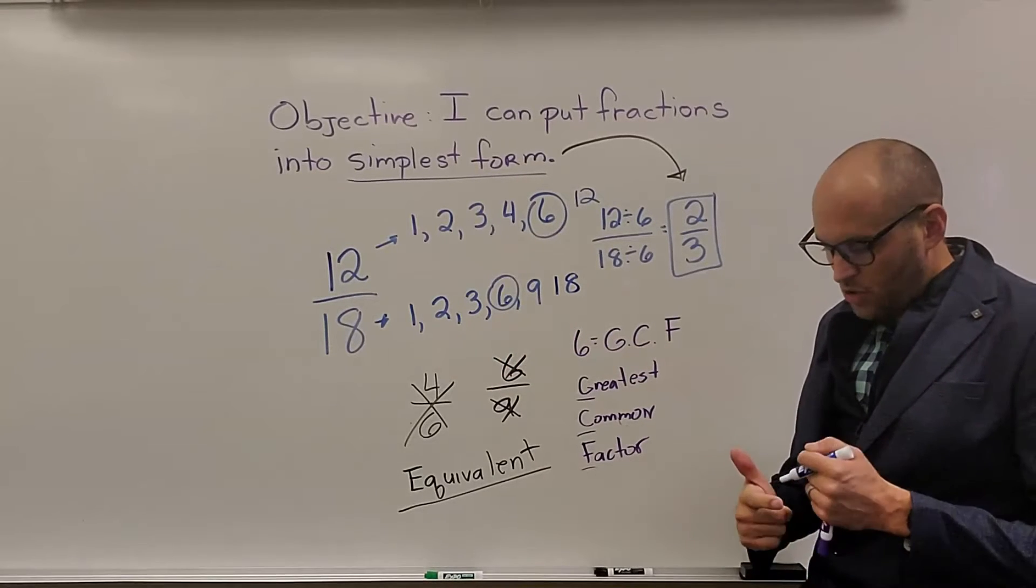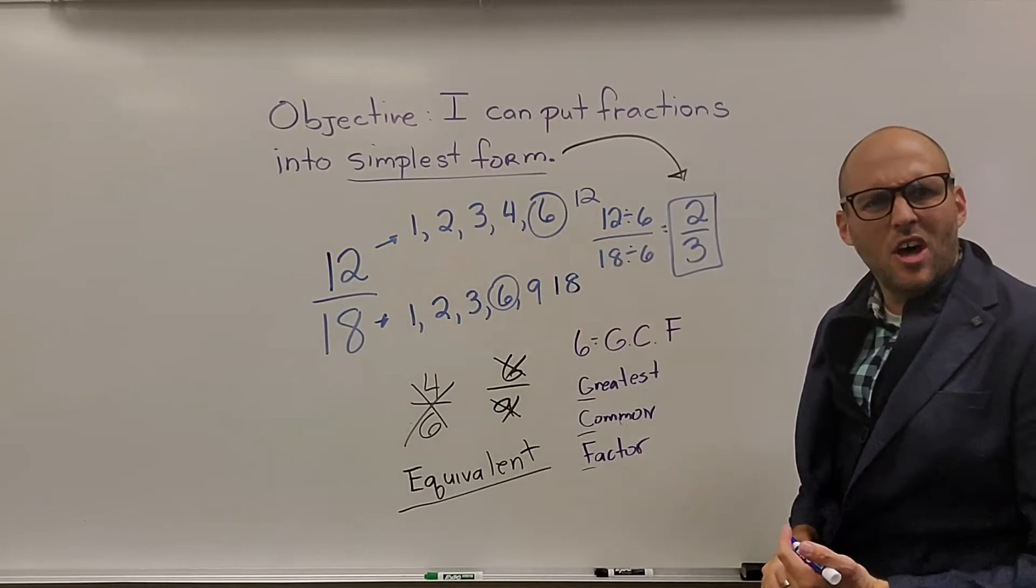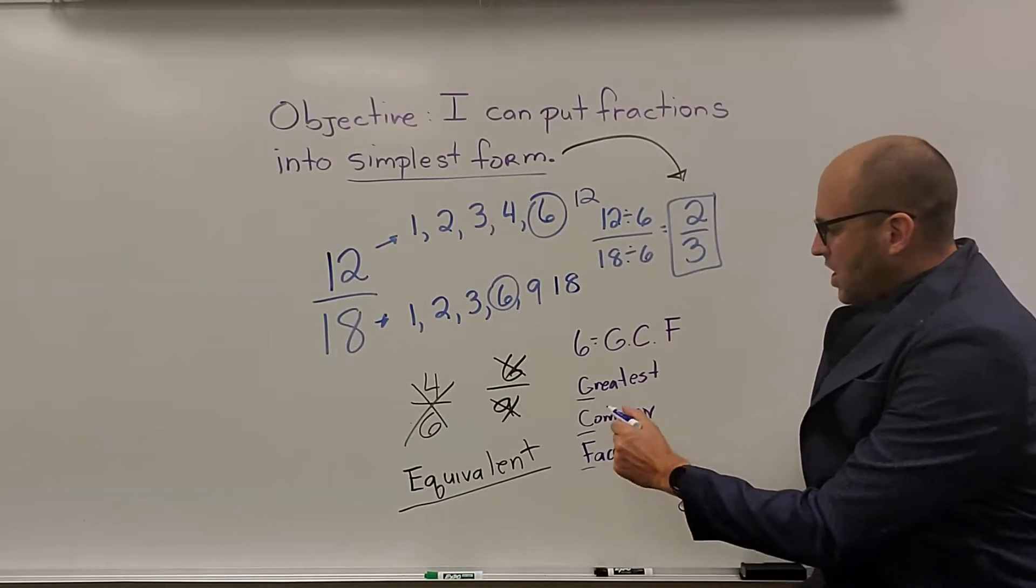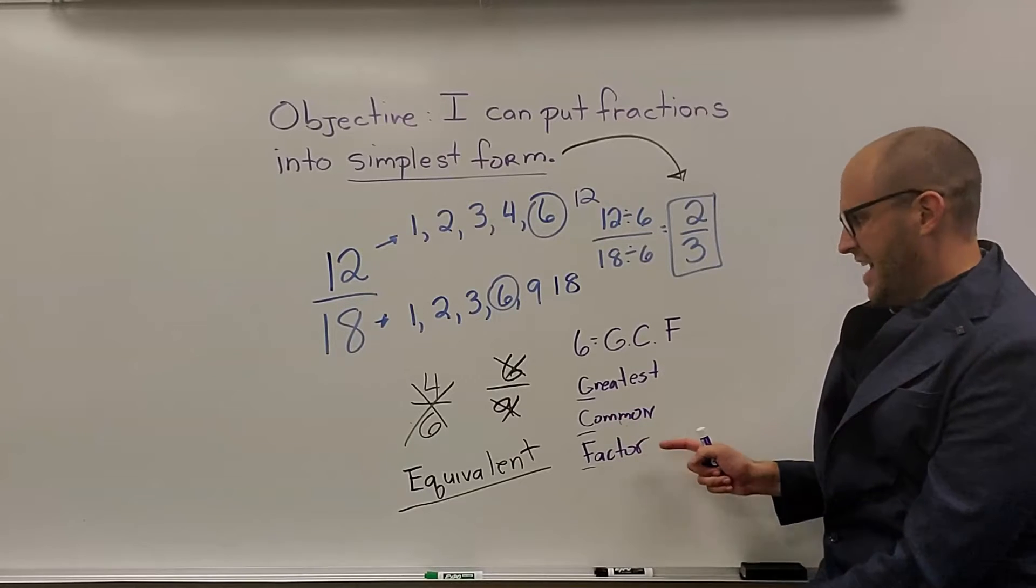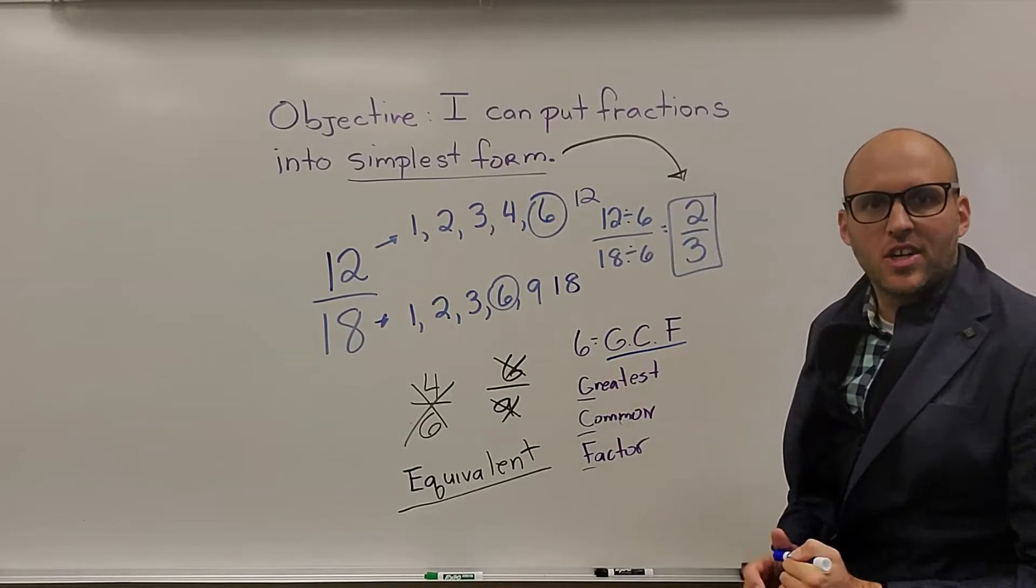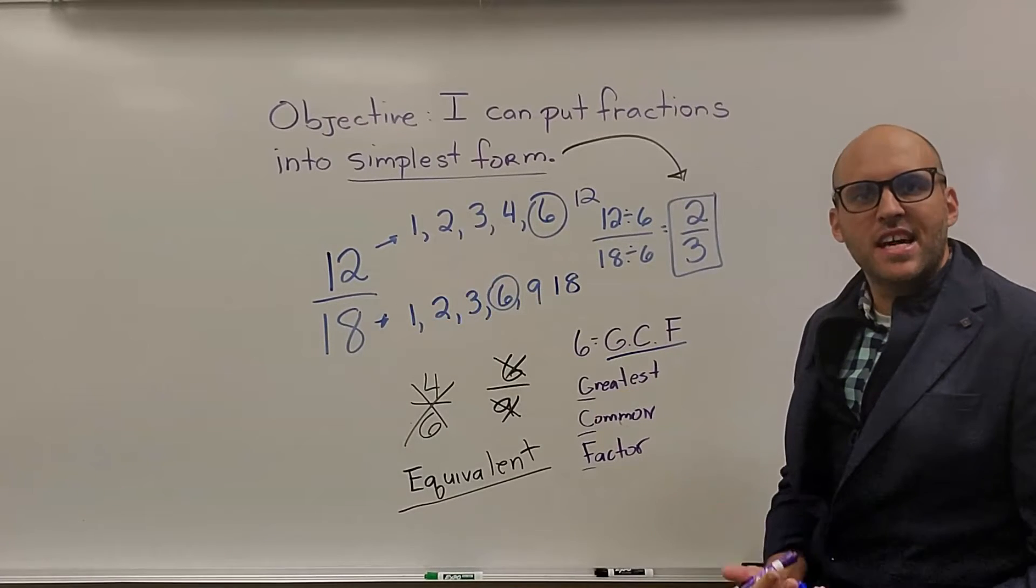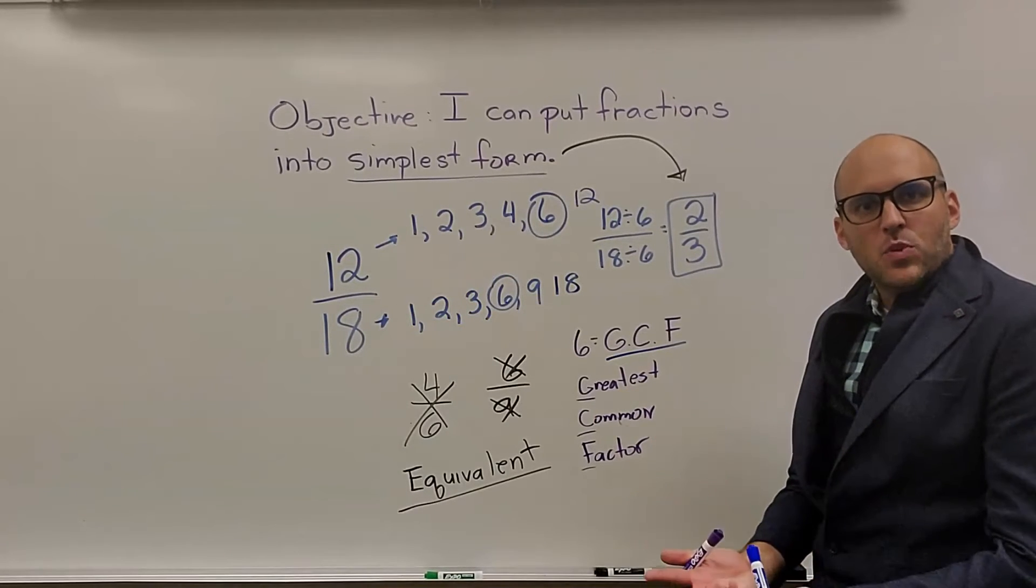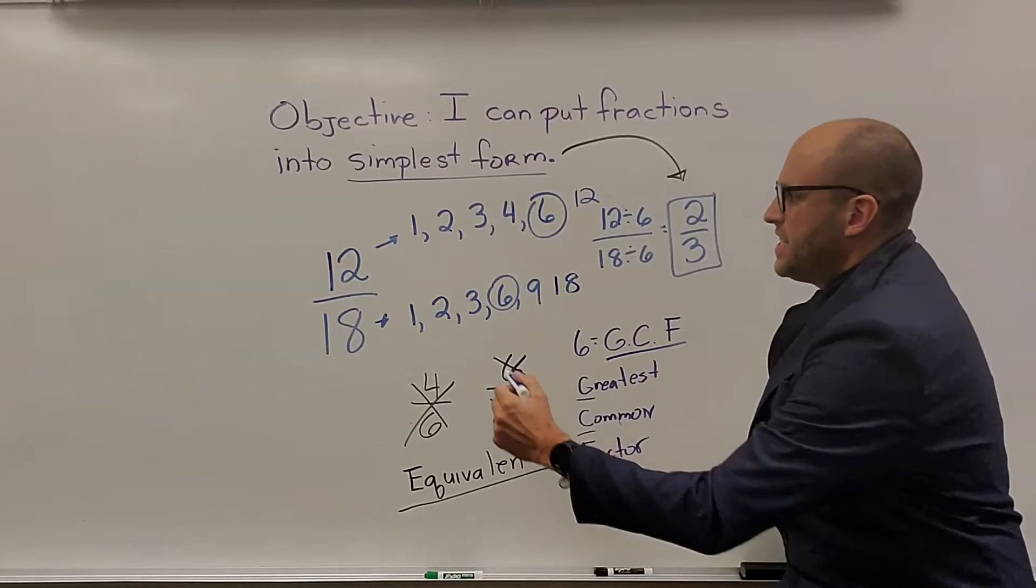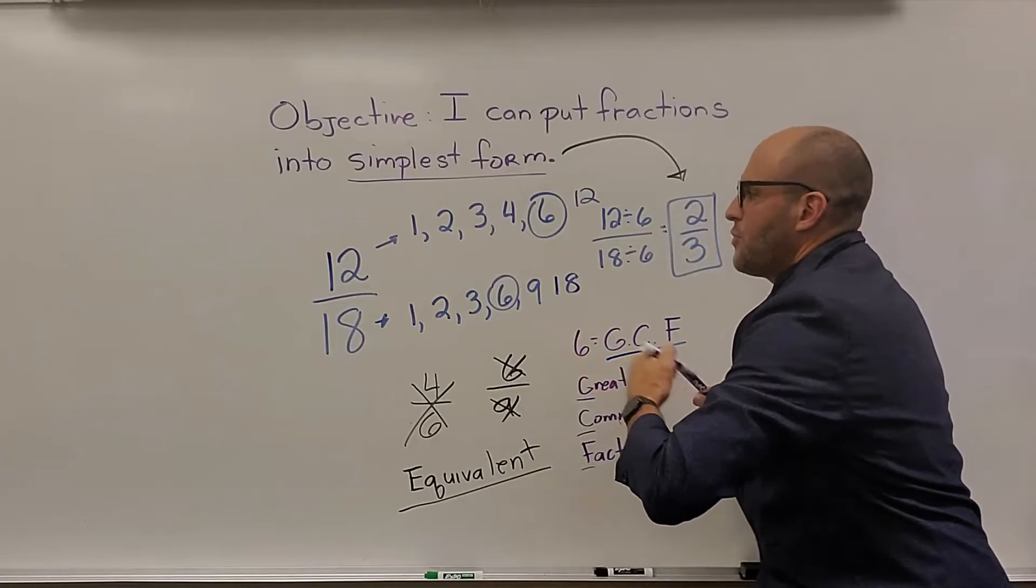You don't have to do this once you start getting better at simplest form, but starting out writing down all these factors is going to help you come up with what is called the greatest common factor or abbreviated GCF. The greatest common factor is the number both the numerator and denominator have in common because we're going to use that for our division. Now when we go through, we see that they have 2 in common and 3 in common.